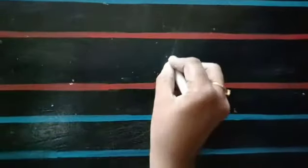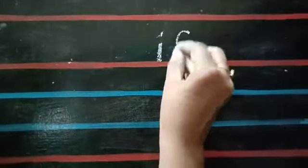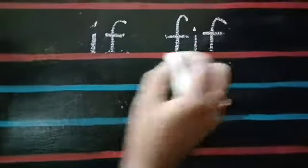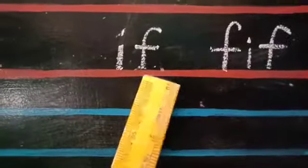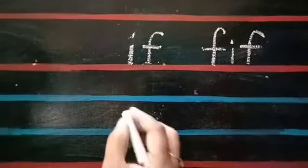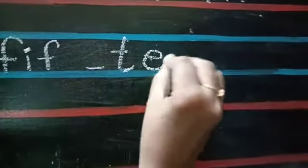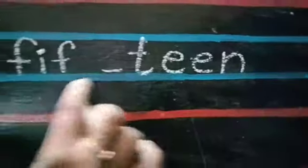I-F is if. F-I-F is fifth. All of you should carefully watch. I-F is if. F-I-F is fifth. Now F-I-F, fifth. And T-E-E-N is fifteen. Teen.